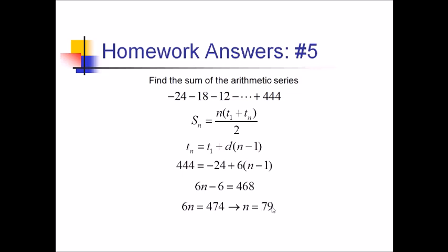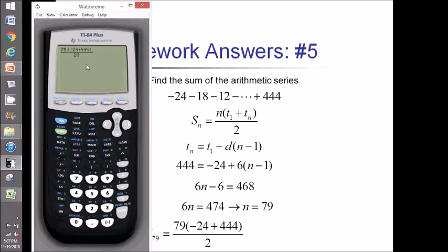So that gives us something to plug in. We've got 79 times negative 24 plus 444 all over 2. And let's use the calculator for this part. I've entered all of it. Calculator says 16,590.